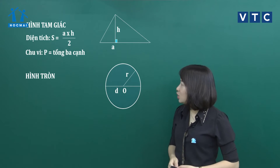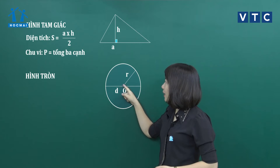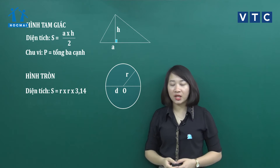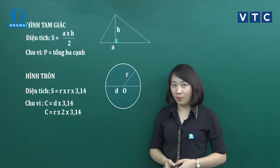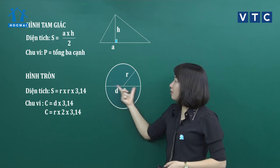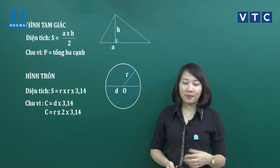Với hình tròn thì sẽ có đường kính là D, tâm O và bán kính R. Diện tích thì bằng R x R x 3,14, còn chu vi thì bằng D x 3,14 hoặc là R x 2 x 3,14. Bởi vì D chính là đường kính thì bằng 2 lần bán kính. Trong tất cả các dạng toán hình học, số đo các cạnh phải đổi về cùng một đơn vị đo.